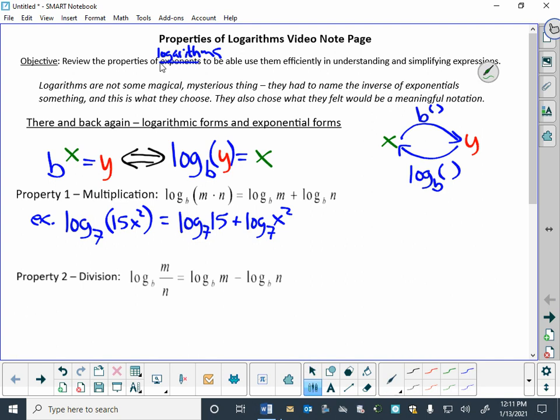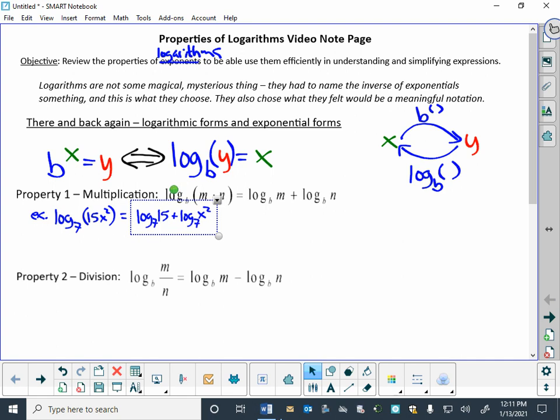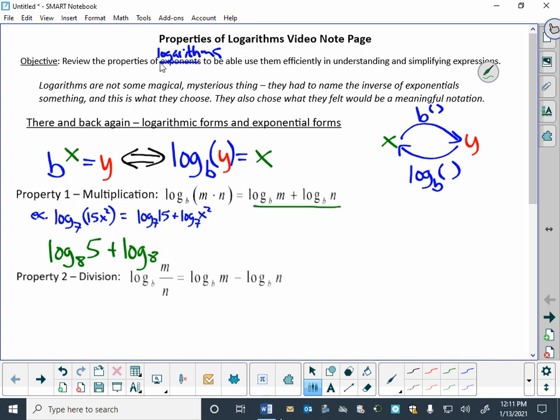I'm going to put a second example up here, and the second example, I'm going to use this in the other direction. So we might see this right-hand side, might be the thing that we see first, and so we might see the log base 8 of 5 plus the log base 8 of 9. Well, this property says that's the same thing as the log base 8 of 5 times 9, or the log base 8 of 45. So I can combine separate logarithms as long as the bases are the same.